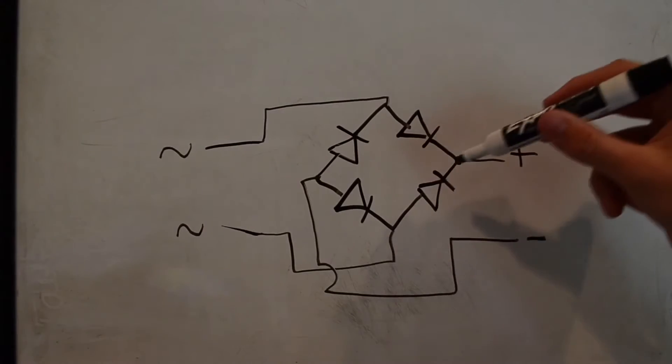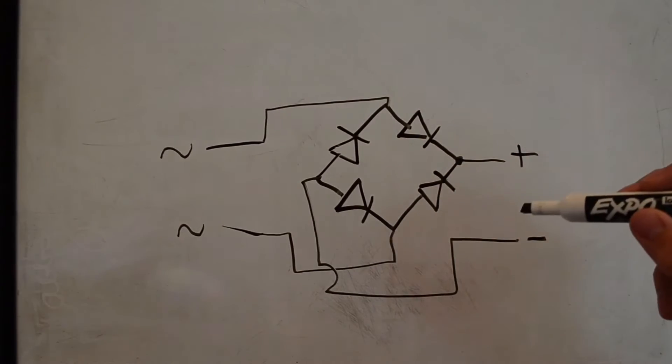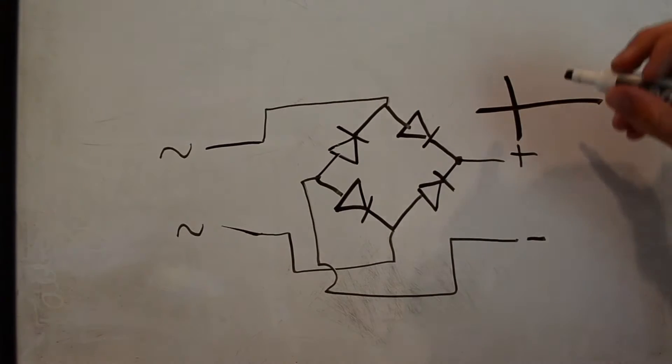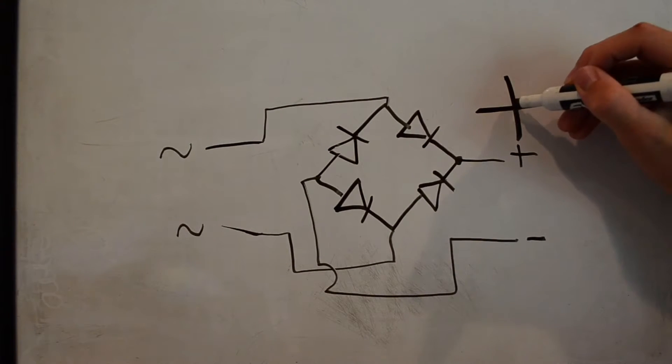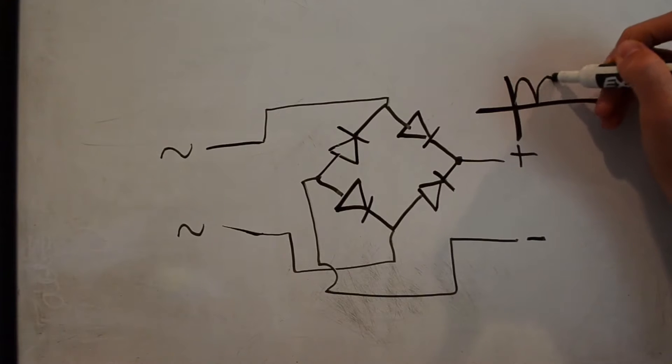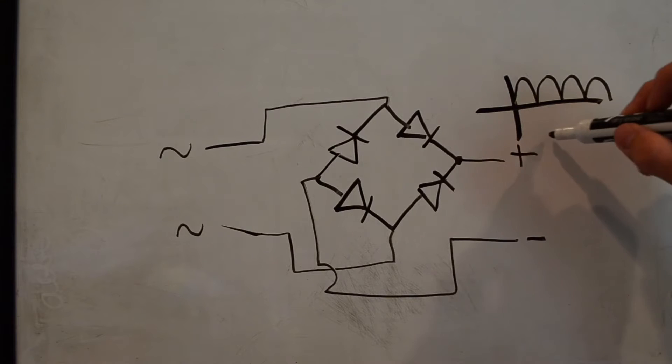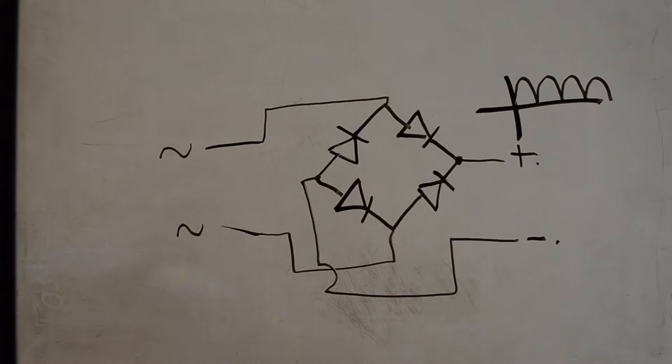However, today we're going to be building a full-bridge rectifier. This is the schematic for a full-bridge rectifier. So basically what happens with this one is that every single cycle of the alternating current is put into it, so it ends up looking like this. And so we get that pulsating DC current coming out of this side with the positive and the negative.